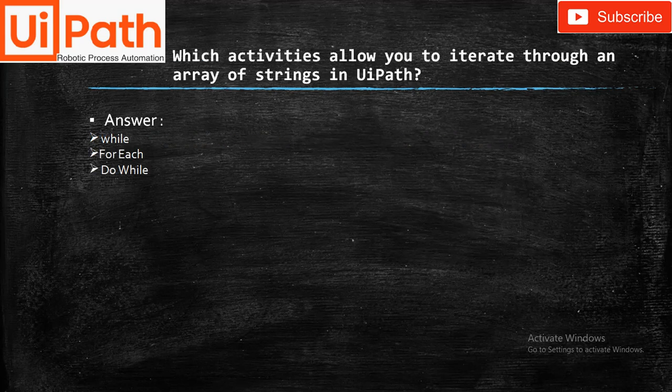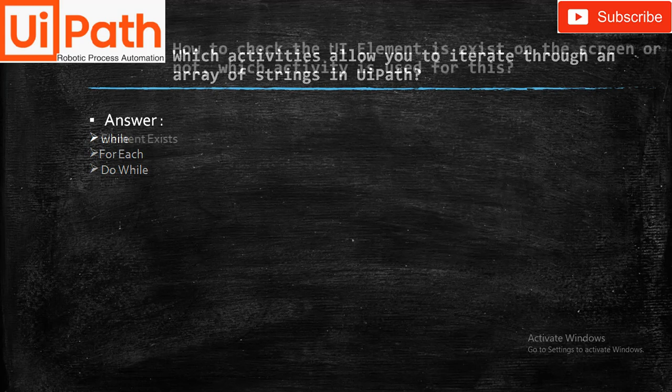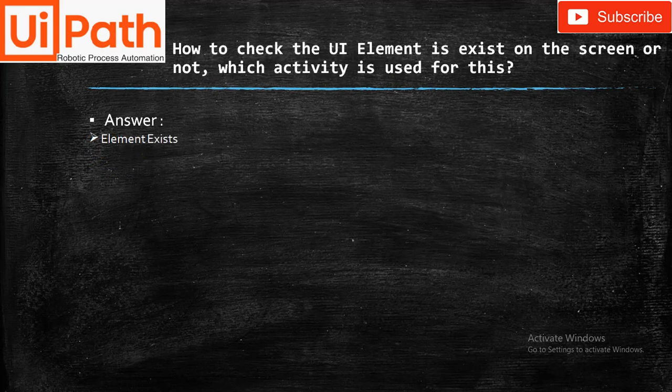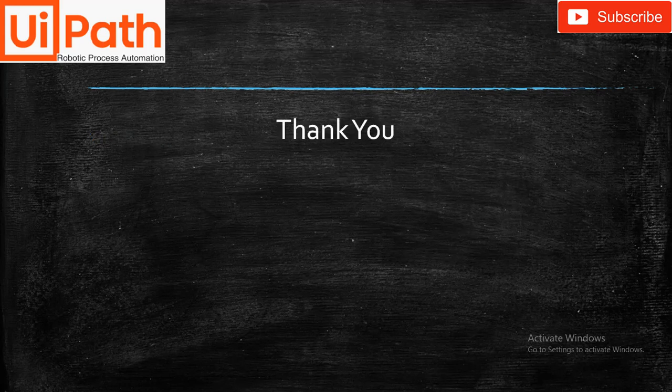Which activities allow you to iterate through an array in UiPath? While, For Each, and Do While. How do you check if a UI element exists on the screen? The Element Exists activity is used for this.